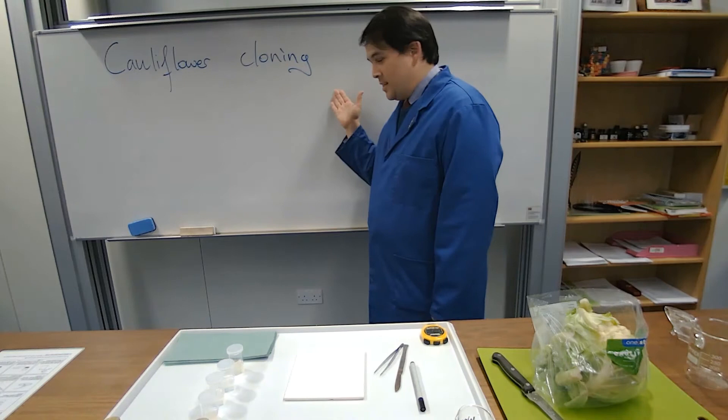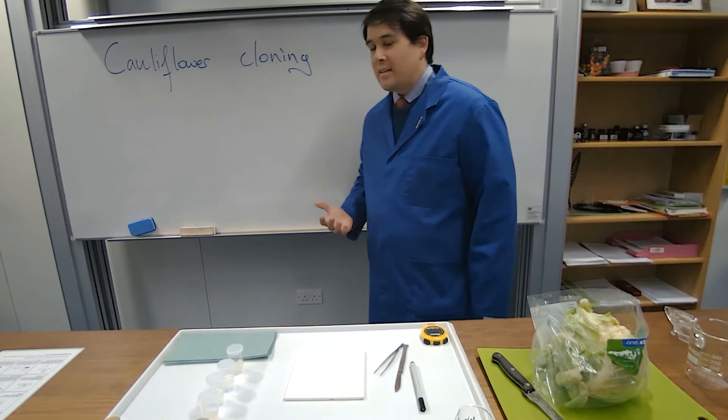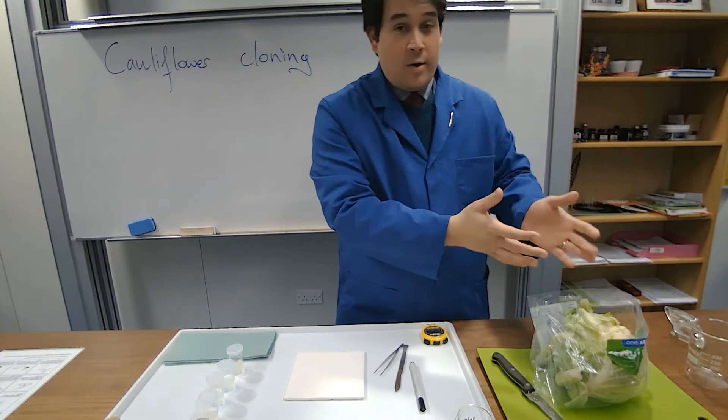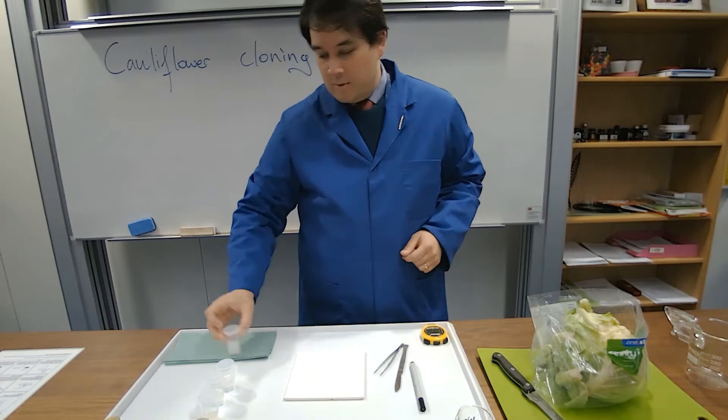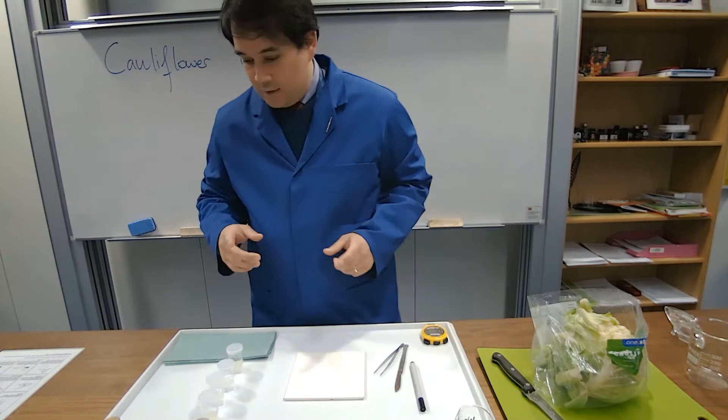Hello, today we're looking at cauliflower cloning. Sounds a lot more exciting than it actually is, well I say that, but it's actually quite cool because what we're doing is we're going to be taking a cauliflower and then we're going to be growing one that's genetically exactly identical with that one but from a teeny tiny part of it using just a bit of jelly.